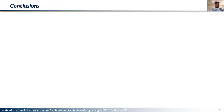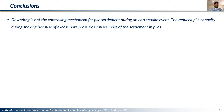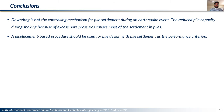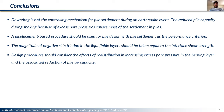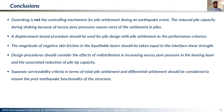This brings us to the conclusions of the study. Down drag is not the controlling mechanism for pile settlement during an earthquake event; the reduced pile capacity during shaking causes most of the settlement. A displacement-based procedure should be used for pile design with pile settlement as the performance criterion rather than a force-based method. The magnitude of negative skin friction in liquefiable soils should be taken equal to the interface shear strength. The design procedure should also account for redistribution effects that increase excess pore pressures in the bearing layer and reduce pile tip capacity. A separate serviceability criterion in terms of total pile settlement and differential settlement should be considered to ensure post-earthquake functionality of the structure.